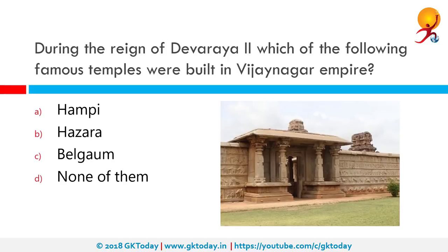During the reign of Devaraya II, which of the following famous temples were built in the Vijayanagara Empire? The correct answer is Hazara Rama Temple in Hampi, an important shrine. It was built in the early part of the 15th century by king Devaraya II. It was originally built only as a sanctum, a pillared hall and an Ardha Mandapa, and later renovated to add an open porch and beautiful pillars.